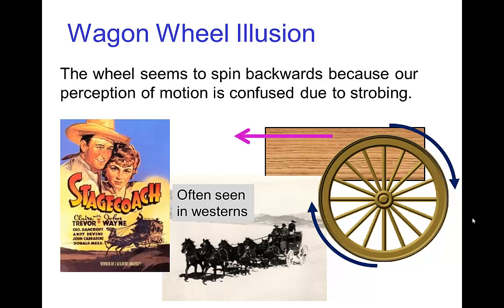Since we're talking about rotating wheels, I should mention this common visual illusion you may see in westerns or with automobile wheels. Sometimes you see a vehicle moving in one direction, but the rotation of the wheel seems to be opposite from what you would expect given the direction of motion — the wheel seems to be turning in reverse. This is called the wagon wheel illusion, and it's often seen when you see a stagecoach in a western.